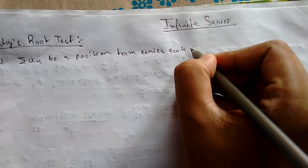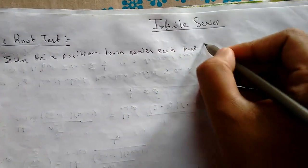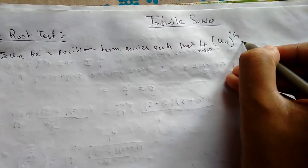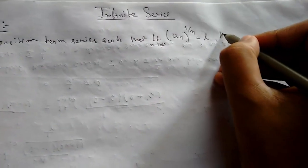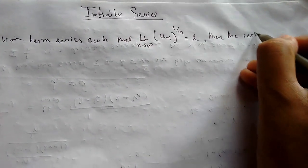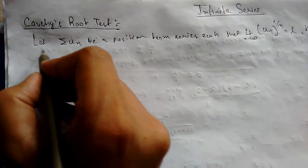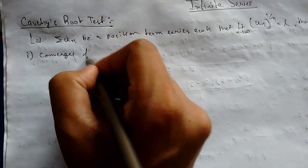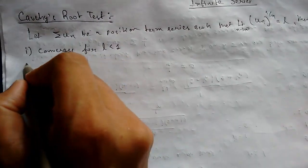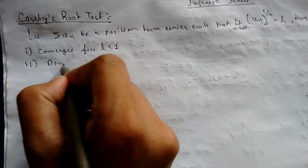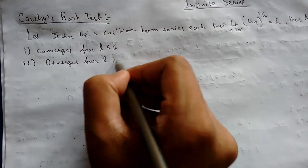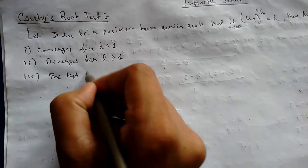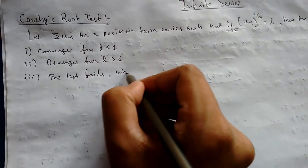such that limit n tending to infinity of (u_n)^(1/n) equals L. Then the series: (i) converges for L less than 1; (ii) diverges for L greater than 1; (iii) the test fails when L equals 1.